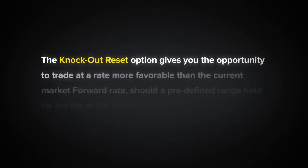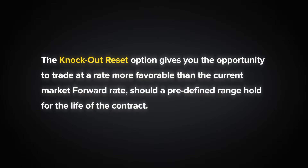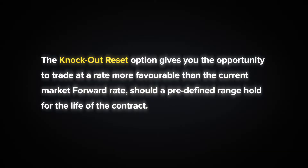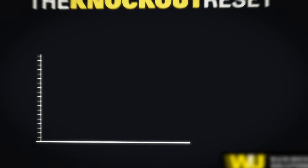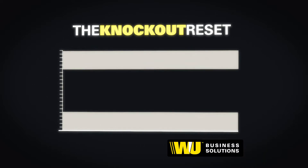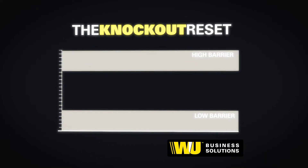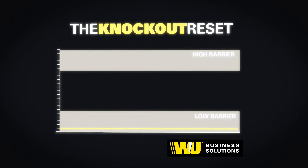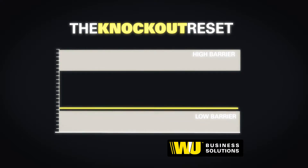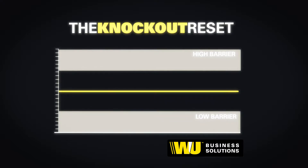The knockout reset option gives you the opportunity to trade at a rate more favorable than the current market forward rate, should a predefined range hold for the life of the contract. If this range is breached at any time during the life of the contract, the structure reverts to a forward at the reset protection rate.